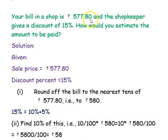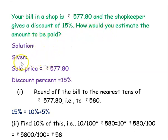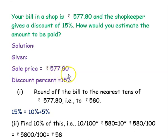The shopkeeper gives a discount of 15 percent. How would you estimate the amount to be paid? Let's see what is given first: the sale price is rupees 577.80, that is 577 rupees and 80 paise, and the discount percent is 15 percent.